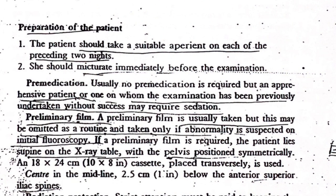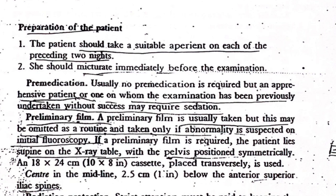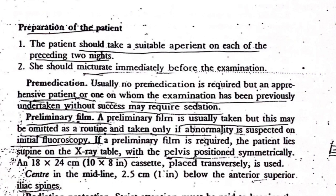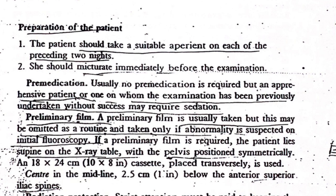Preparation of the patient: the patient should take a suitable aperient on each of the two preceding nights and should micturate immediately before the examination. Usually no premedication is required, but an apprehensive patient or one on whom the examination has been previously attempted without success may require sedation. A preliminary film is usually taken, but may be omitted and taken only if abnormality is suspected on initial fluoroscopy.